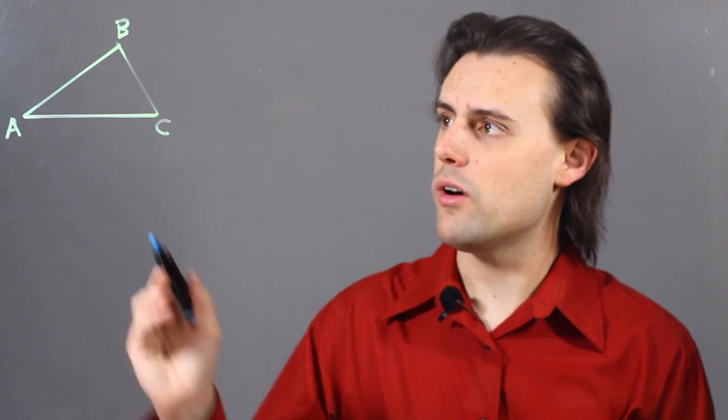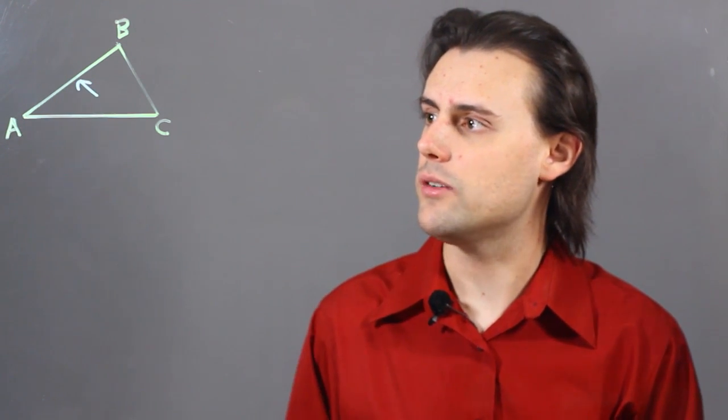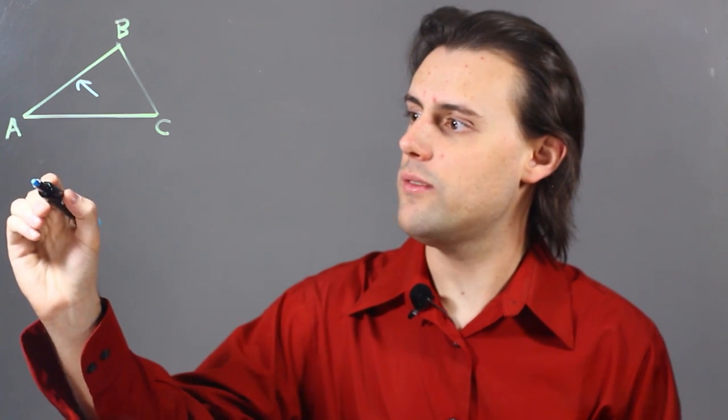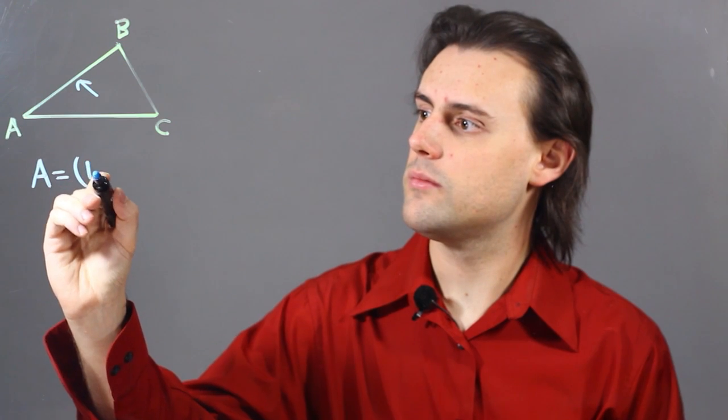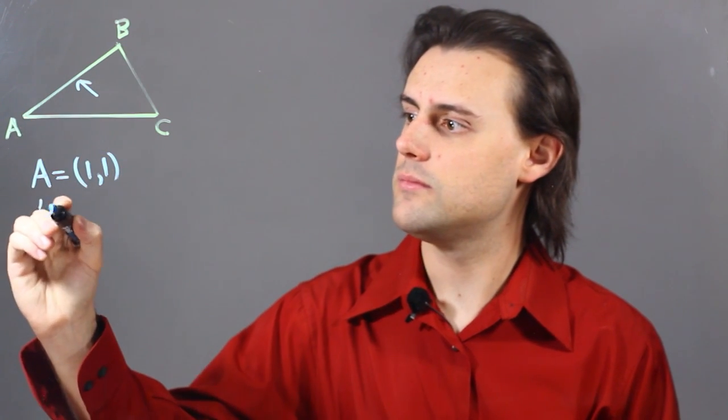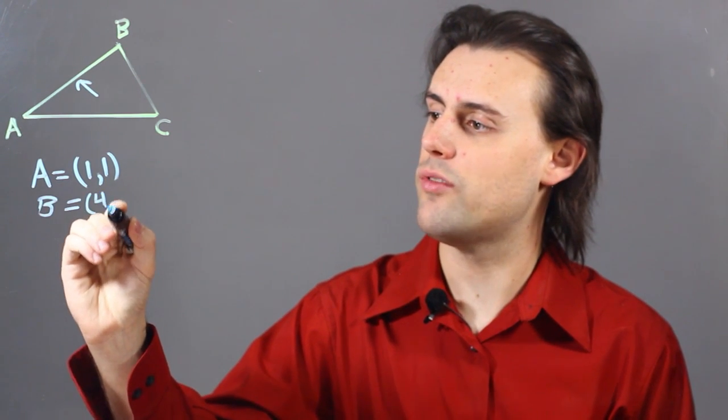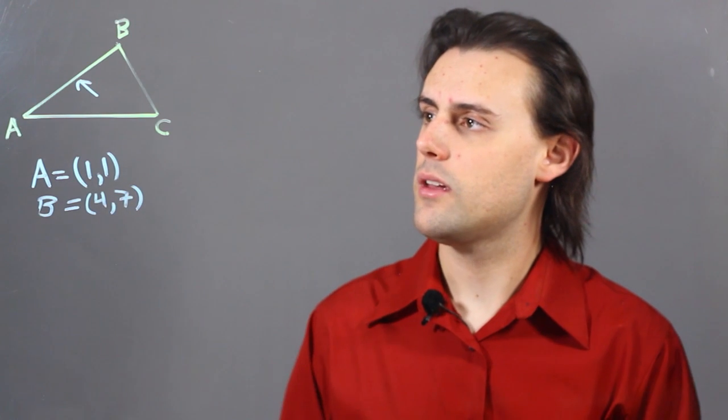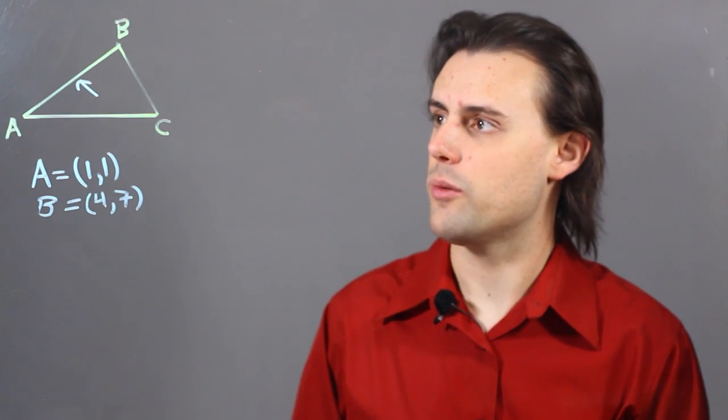For example, if I wanted to find the slope of this side of the triangle, and I were given the coordinates of points A and B, in this case A would be (1, 1), and B, for example, could be (4, 7), then I could simply find the slope by using the slope formula.